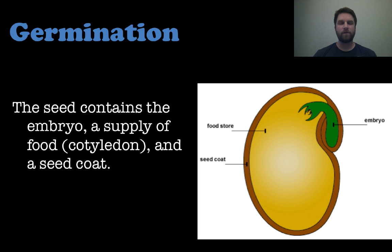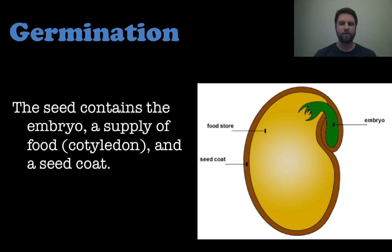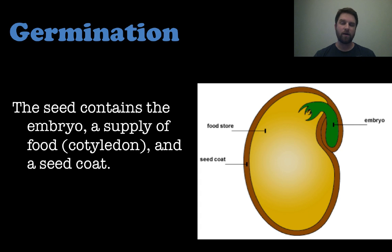Another thing to understand is seeds and how they germinate. Germination is when you plant a seed in the ground and it starts growing a little plant. The seed portions to understand are: the embryo, which is the young plant; the cotyledon, the large portion that serves as the food source; and the seed coat, the protective covering that ensures the embryo is protected.